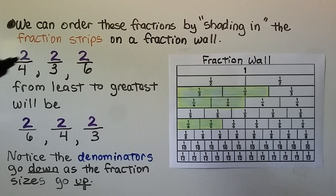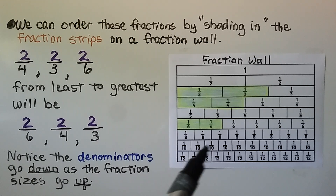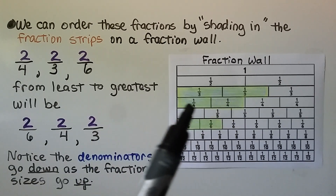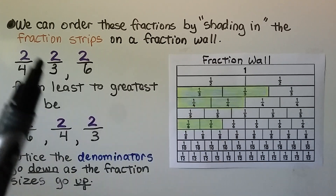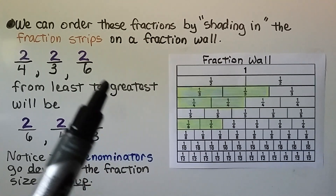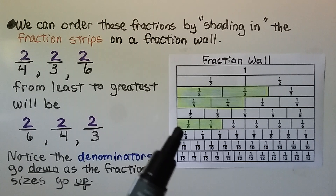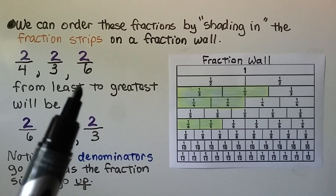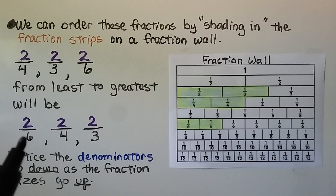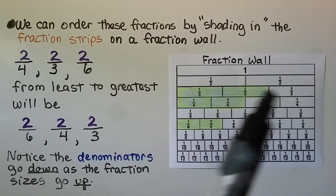We can order these fractions by shading in the fraction strips on a fraction wall. I have a copy of this on my Facebook page in the image section that you can copy, paste, and print if you'd like. Going from least to greatest: we shade in two-fourths — two of the one-fourth unit pieces. We shade in two-thirds — one-third and another third makes two-thirds. And we have two-sixths, so two one-sixth pieces. The shortest is two-sixths, so it goes first; the middle one is two-fourths; and the longest is two-thirds, which goes last.